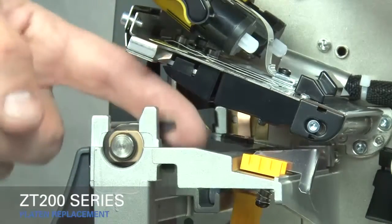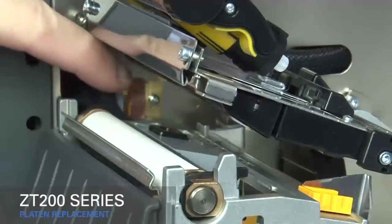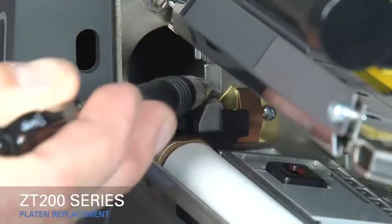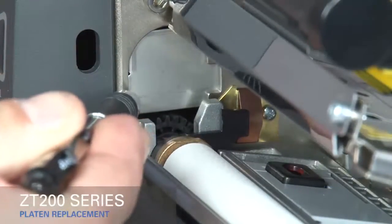Turn the two lock tabs of the platen toward the rear of the printer to lock it in place. Close the gear cover. Clean the platen roller.